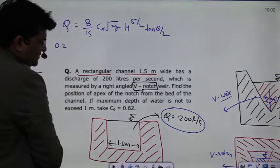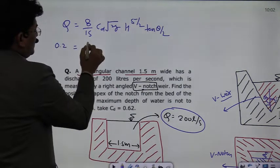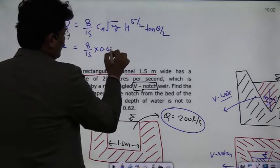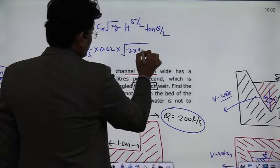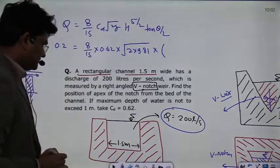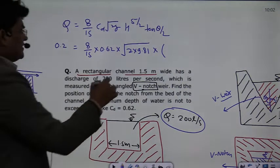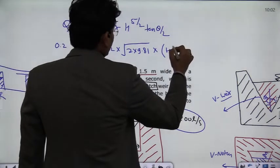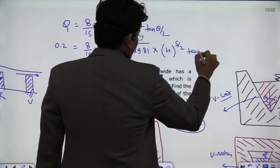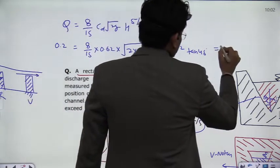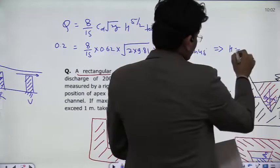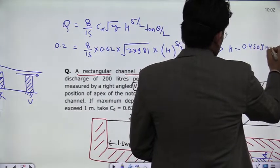So put the data: 200 liter per second means 0.2 meter cube per second. This is 8 by 15 multiplied by C_d is 0.62, multiplied by root 2g, that is 2 into 9.81. What is the head available? Head available we have to remove here, so we have to remove it: h raised to the power 5 by 2, multiplied by tan theta by 2, that is 45 degree.